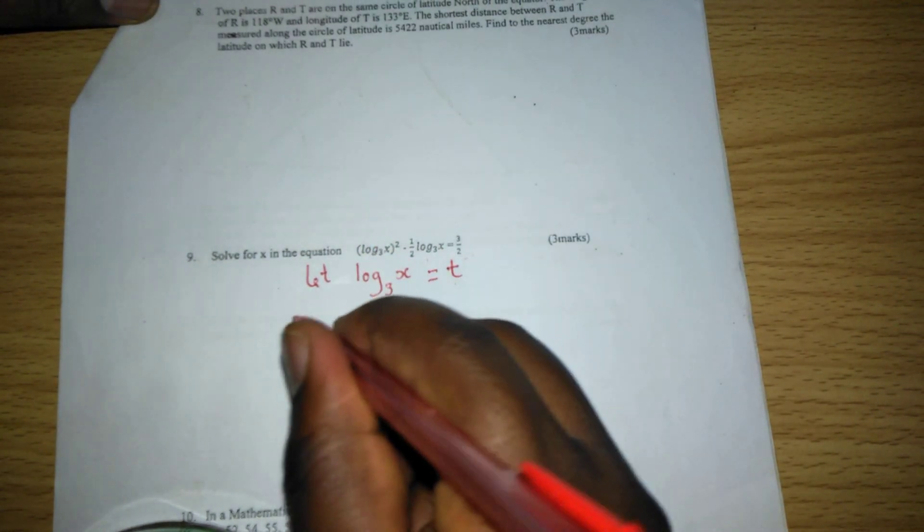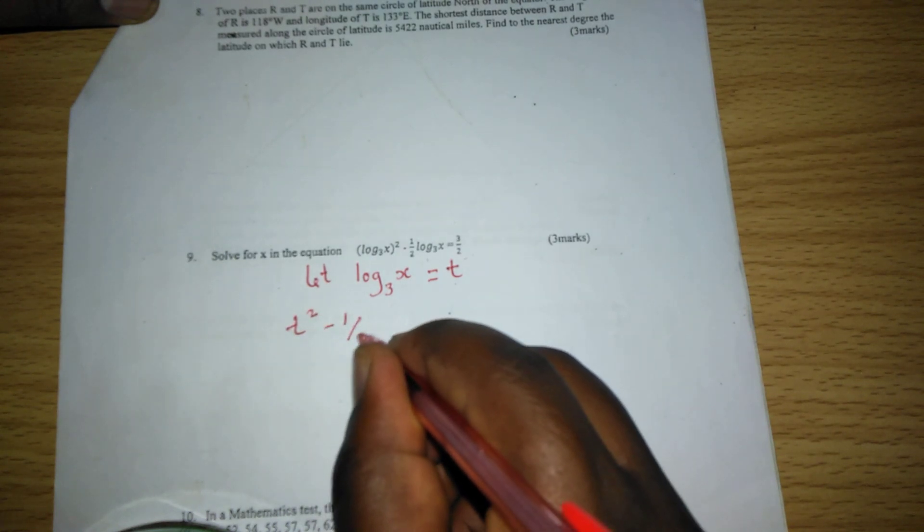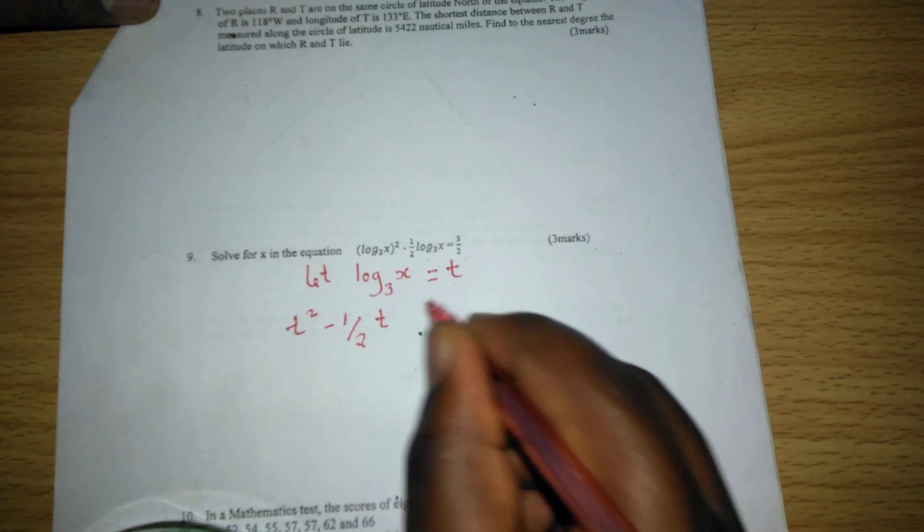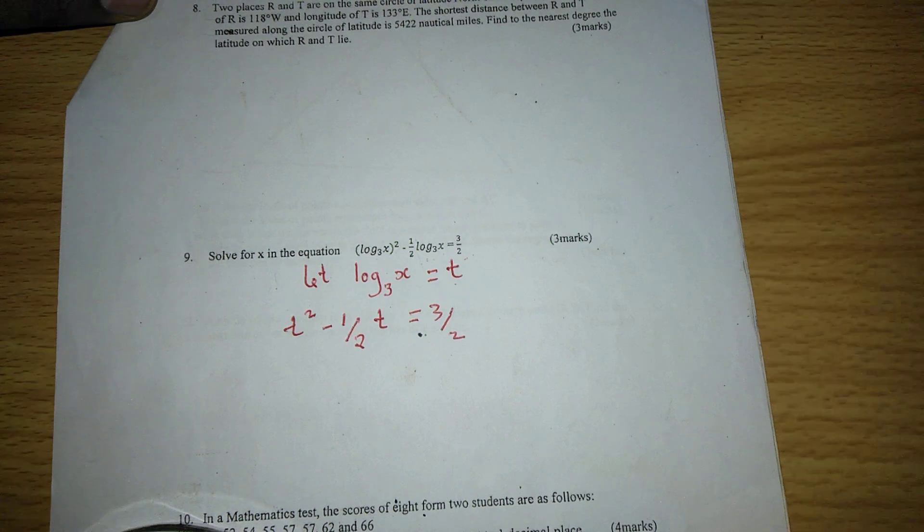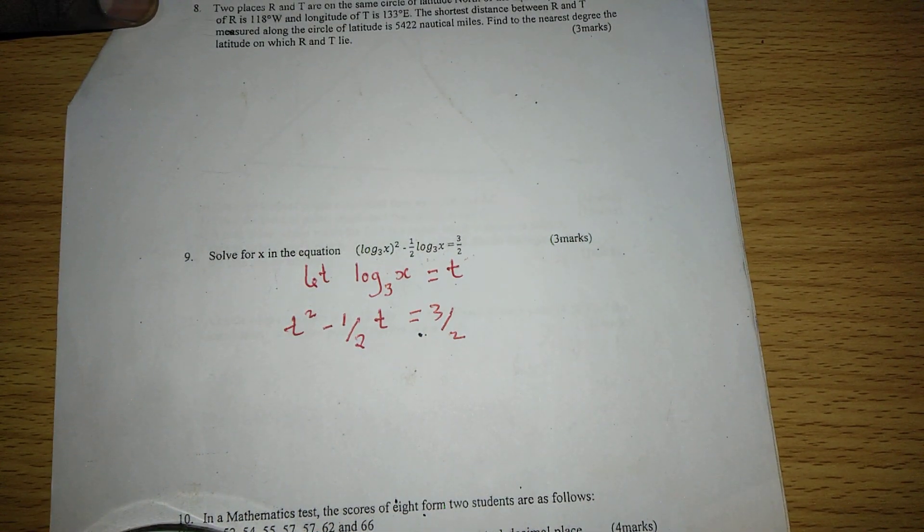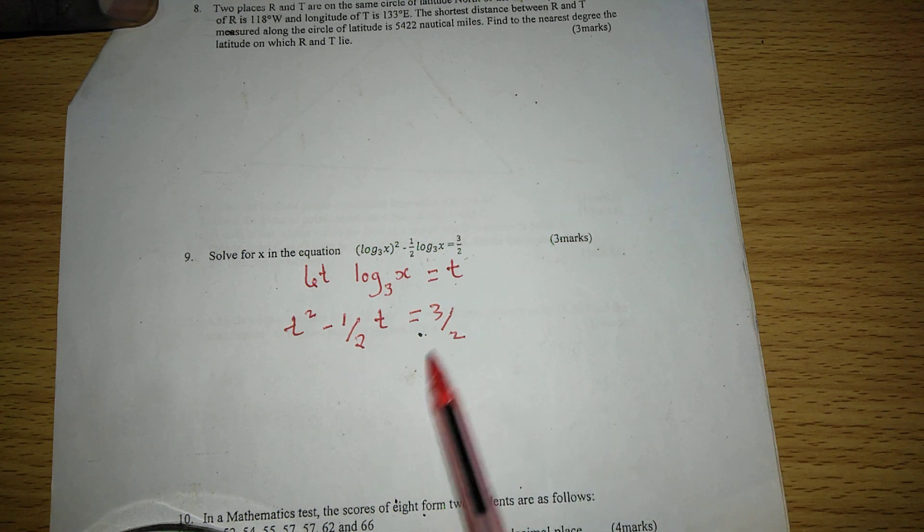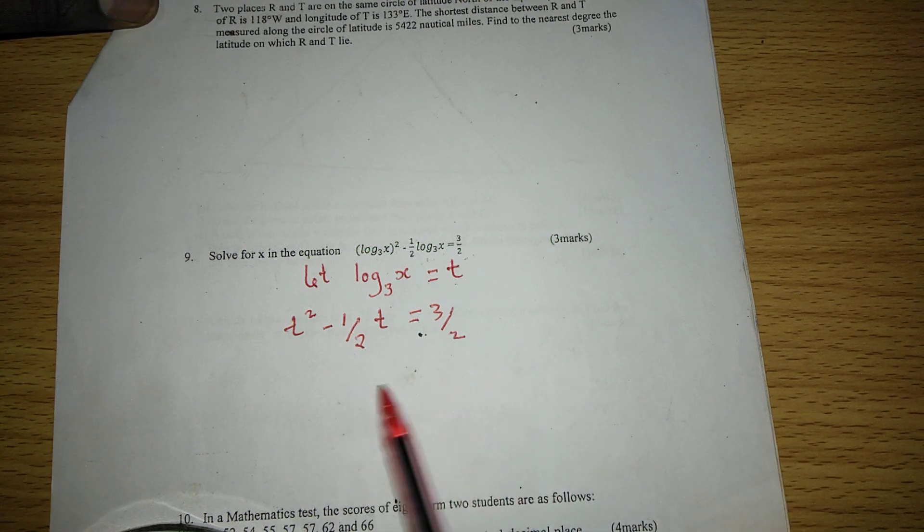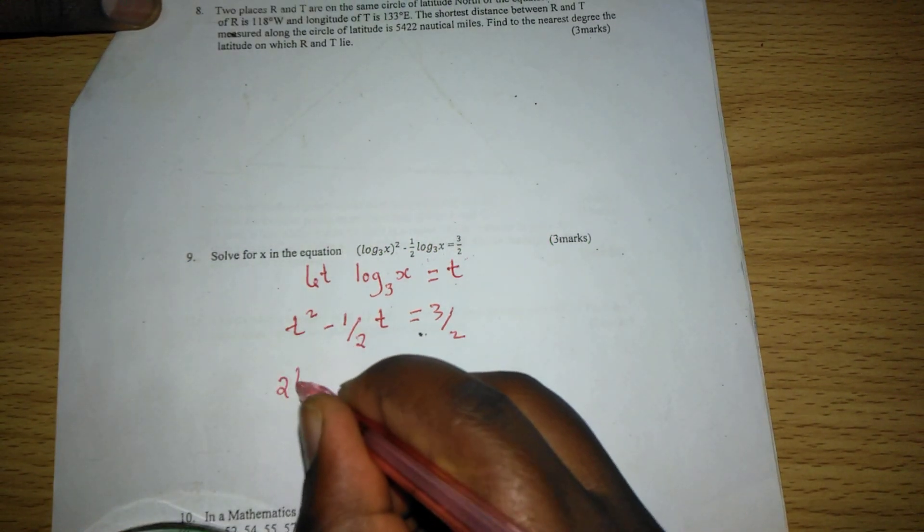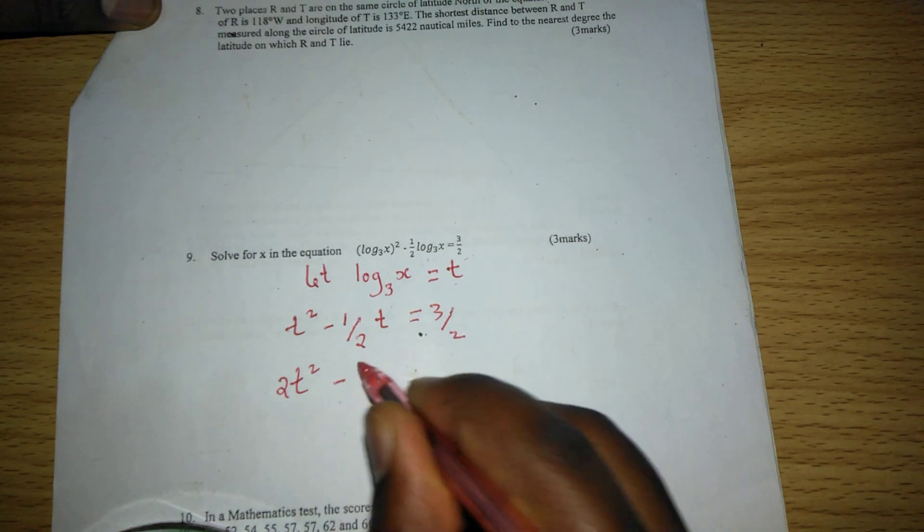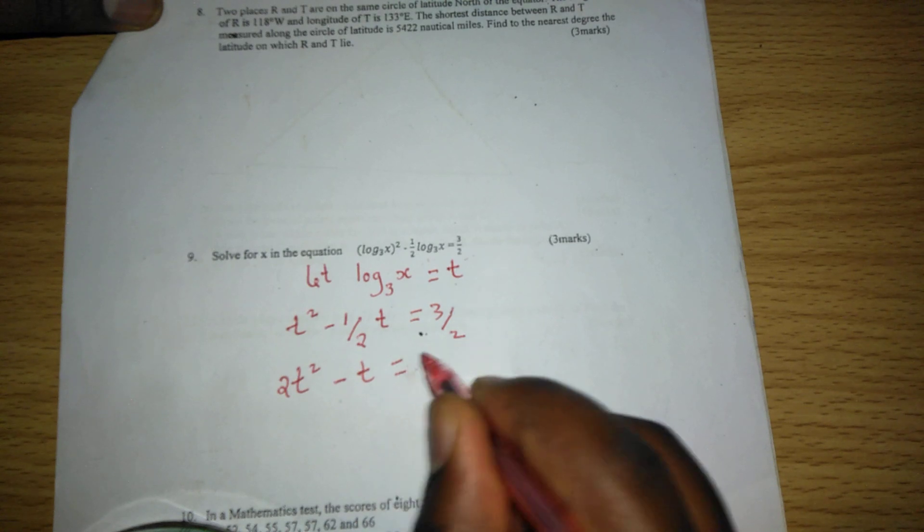Then now we will have t squared minus half t equals 3 out of 2. From there, we can simplify the equation by doing away with the fraction. We can do so by multiplying with 2 throughout. When we multiply throughout by 2, we shall have 2t squared minus t, and the other side we will have 3.